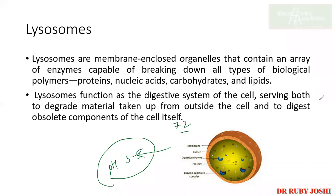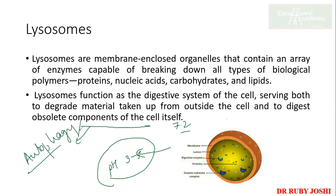The lysosome functions as the digestive system of the cell, serving both to degrade material taken up from outside the cell and to digest components of the cell itself — for example mitochondria and chloroplasts. This process is called autophagy, also known as PCD2 (programmed cell death 2), whereas apoptosis is known as PCD1. Please remember this distinction.